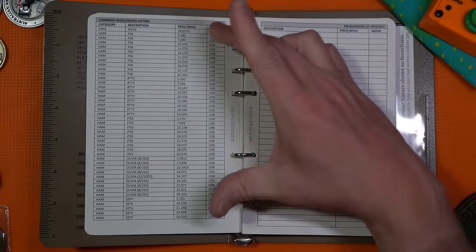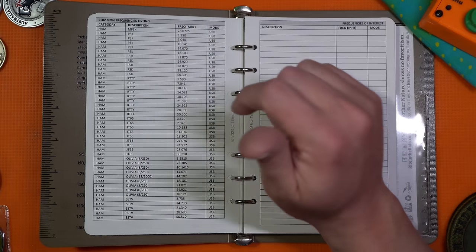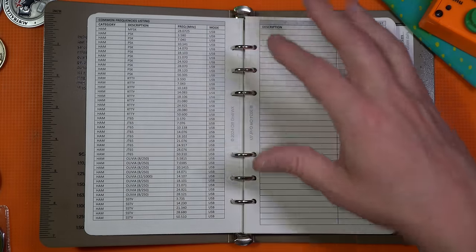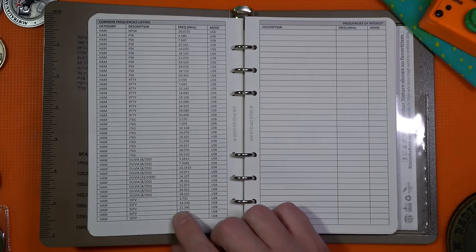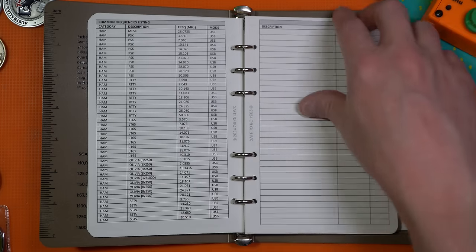Now this is listed as common frequencies, which, okay, that's fine. PSK, MFSK, RIDI, JT65, Olivia, SSTV. Some of these are pretty much universal standards like 14.230 for SSTV, but not necessarily all of them. So no big deal there.